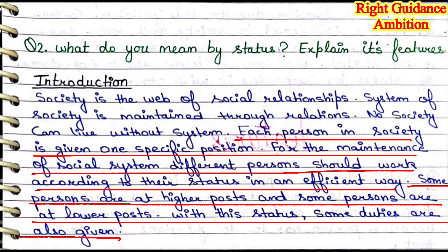Every person is given a specific role, status, and position in society, and according to that, they function. For the maintenance of the social system, different persons should work according to their status in an efficient way. If we want to make a system in society, every individual works according to their status. In this way, society doesn't interfere with anyone's own work. Some persons are at a higher post and some persons are at a lower post. In offices, everyone's posts are not the same — there is a hierarchy from upper to lower post. Whether it's an office, society, or any institution, people have a status, and according to that status, some duties are also given.